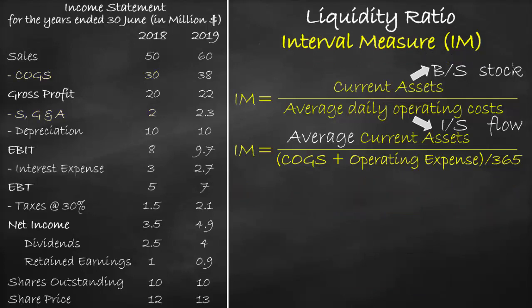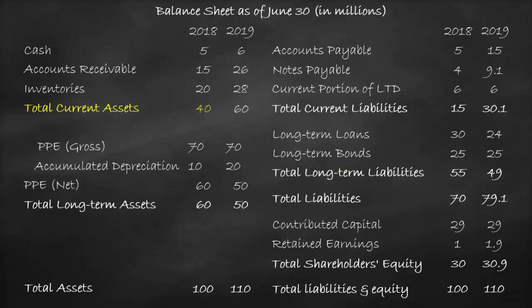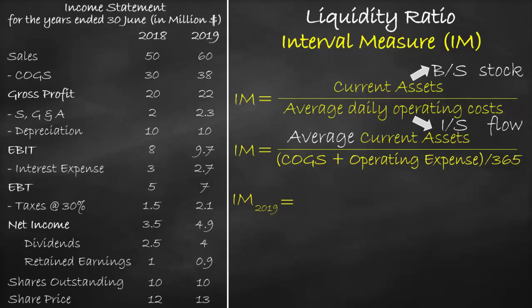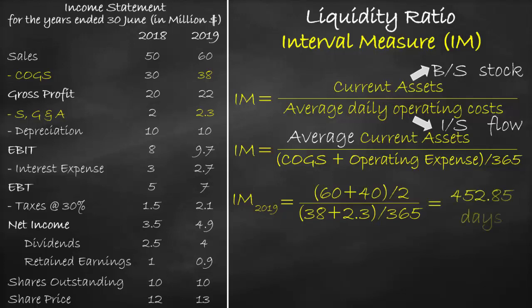Next, let's calculate the interval measure ratio for the year 2019. Let's look at the balance sheet for the average current assets in 2019 and 2018. We have current assets of $60 million in 2019 and $40 million in 2018, divided by 2, all divided by cost of goods sold of $38 million plus selling, general, and administration expenses of $2.3 million, divided by 365, which equals 452.85 days.